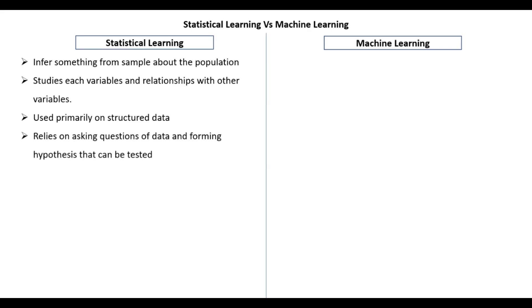It relies on asking questions of your data. So you try to ask questions about your data, about your observations, about your variables and you try to form hypotheses. The main key of statistical analysis is you try to form hypotheses and you try to establish means by which you can reject the hypothesis or you can prove an alternate hypothesis. So that is what statistical learning focuses on.